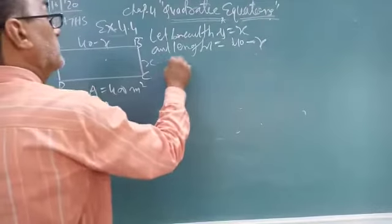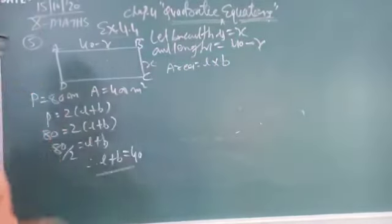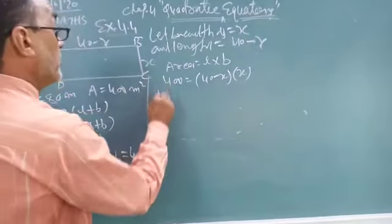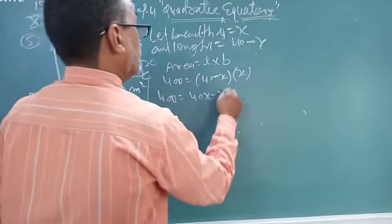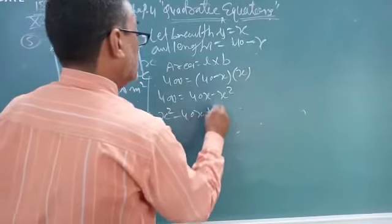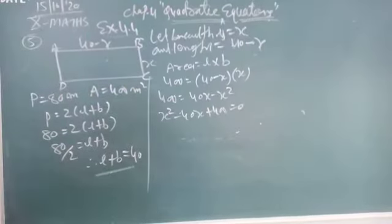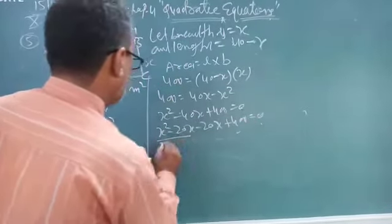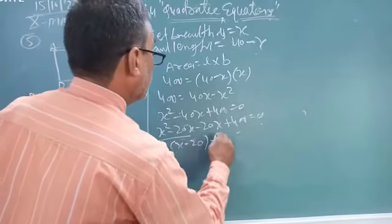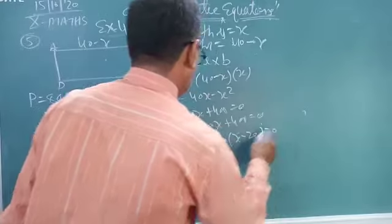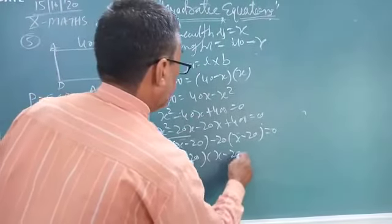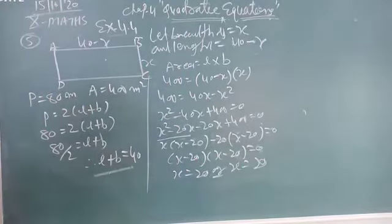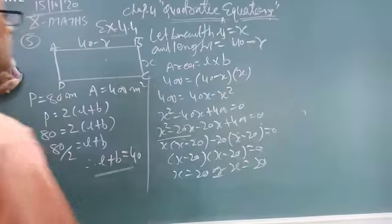Now area equals length into breadth. Area is given already 400. 400 equals length 40 minus x into breadth x. Therefore, 400 equals 40x minus x squared. So x squared minus 40x plus 400 equals 0. Now it is a perfect square. It very easily done factor. Means x squared minus 20x minus 20x plus 400 equals 0. X minus 20, x minus 20. If you want you can find with the help of discriminant. So d equals 0. So what is x? X means 20.